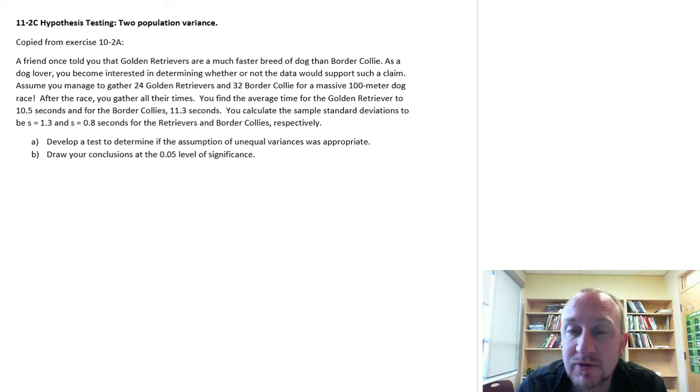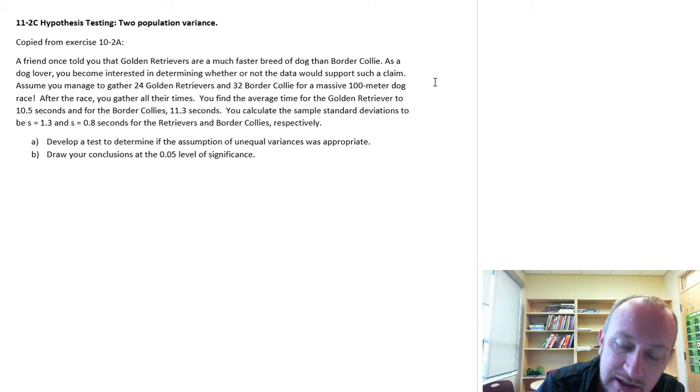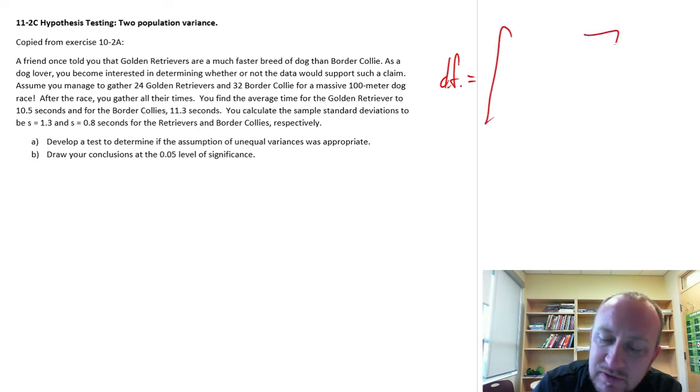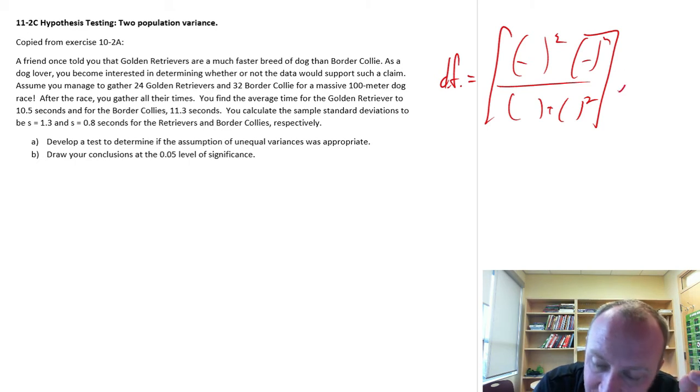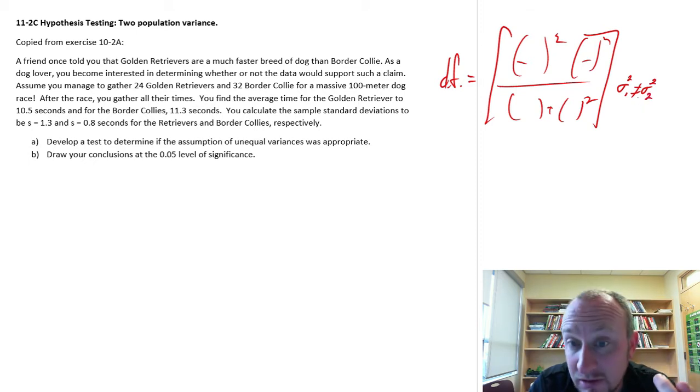And when we were performing those t-tests, of course, we had to figure out what were the degrees of freedom. And there were two ways of calculating the degrees of freedom back then. One was a huge, big, ugly formula with all of these things squared. That formula was necessary if we had reason to believe the two population variances were not equal to each other.